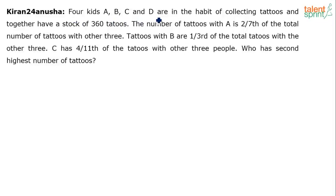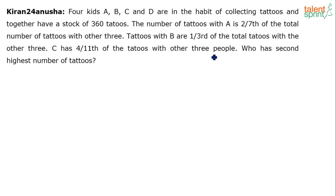Four kids A, B, C and D are in the habit of collecting tattoos and together have a stock of 360 tattoos. The number of tattoos with A is two-seventh of the total number of tattoos with the other three. Tattoos with B are one-third of the total tattoos with the other three. C has four-eleventh of the tattoos with the other three people. Who has the second highest number of tattoos?